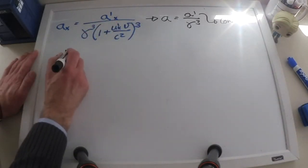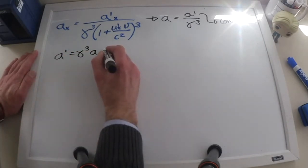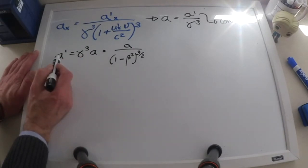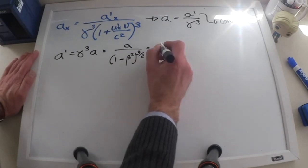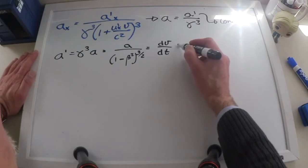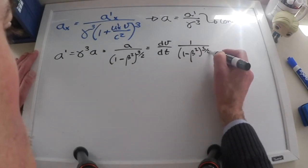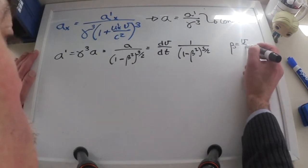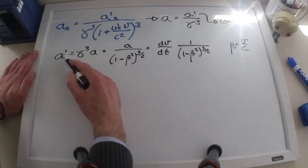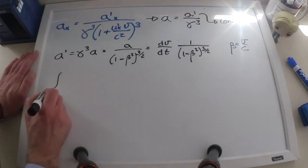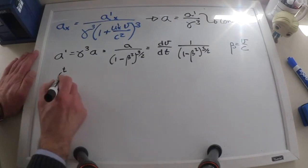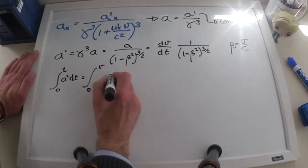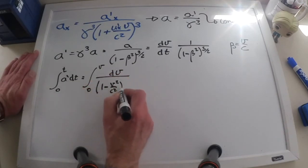Now I will rewrite that as a prime equals gamma cubed times a, which is the same as a over 1 minus beta squared to the power of 3 over 2, and I want to integrate this, because what I'm looking for is the velocity as a function of time. As a reminder, beta equals v over c. I will separate the variables — dt here — a prime is a constant — and I will integrate this expression. On the left hand side I will have the integral from time zero to an arbitrary time t of a prime dt, and on the right hand side I will have the integral from velocity zero to an arbitrary velocity v of dv over 1 minus v squared over c squared to the power of 3 over 2.